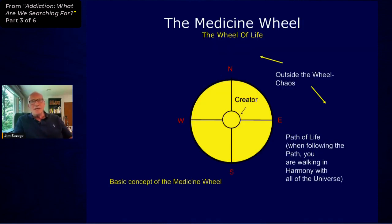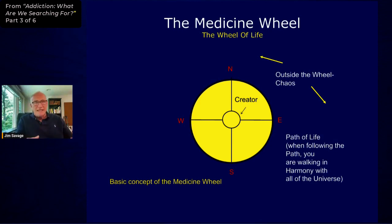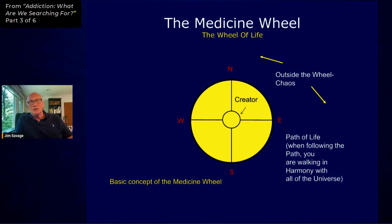The small circle at the center represents the creator — the source of life. We're not going to assign any religious connotations; whatever you believe, we at least acknowledge that life comes from someplace, some central source. This circle on the outside — the wheel itself — represents the path of life, and everything outside the path is chaos: life without any order, characterized by denial and delusion. If you're on the path, you're walking in harmony with the universe. If you're off the path, you can't really tell that you're off it.